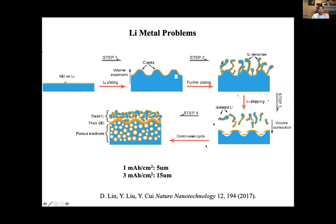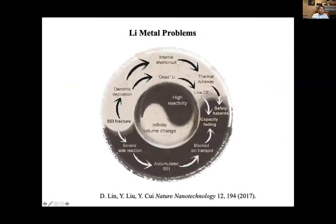Each layer of plating at 3 mAh/cm² — the typical area capacity needed — builds up 15 microns of lithium. That is a lot of dimensional change, and this builds instability in the battery cell. The root causes are: first, high chemical reactivity of lithium — it reacts with electrolyte; we have not found any stable liquid electrolyte against lithium, and even for solid electrolytes, nearly none are truly stable. Second, the volume change is too large, causing dendritic formation, battery shorting, fire, and fading.